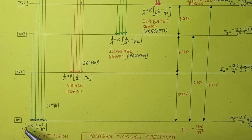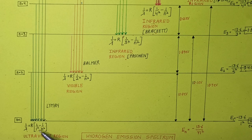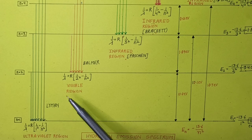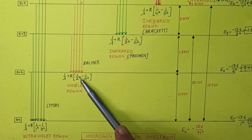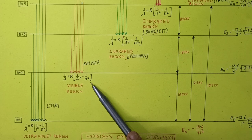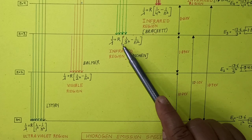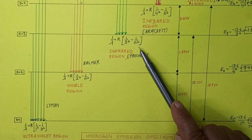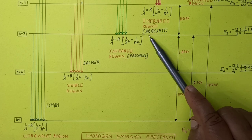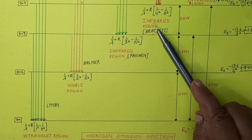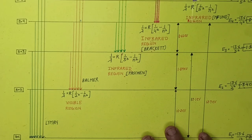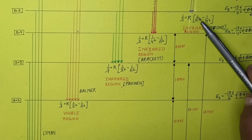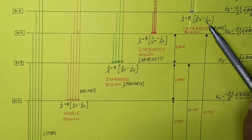For the Balmer series: 1 upon lambda equals R times (1 upon 2 square minus 1 upon n square). For the Paschen series: 1 upon lambda equals R times (1 upon 3 square minus 1 upon n square). For the Brackett series: 1 upon lambda equals R times (1 upon 4 square minus 1 upon n square). For the Pfund series: 1 upon lambda equals R times (1 upon 5 square minus 1 upon n square).